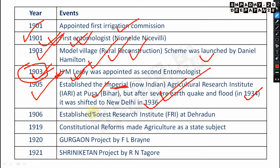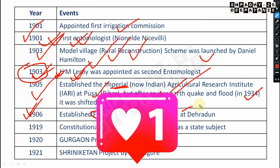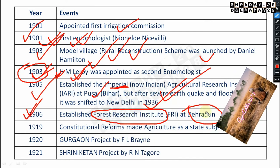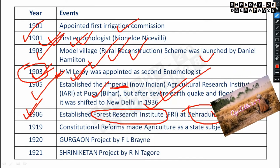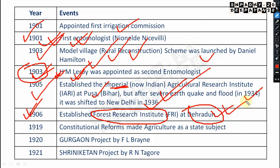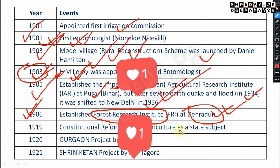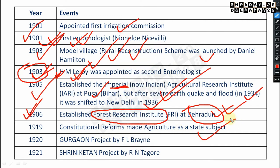FRI — Forest Research Institute — was established in 1906 with its headquarter at Dehradun. This is very important and may come in the exam. Then in 1919, constitutional reforms designated agriculture as a state subject — this is very very important.